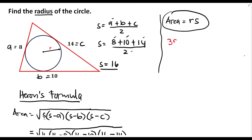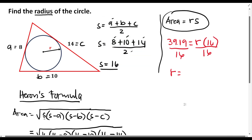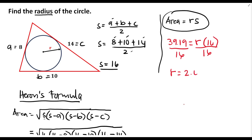Now we can find the radius. The area, 39.19, equals the radius times the semi-perimeter, which is 16. Dividing both sides by 16: 39.19 divided by 16 gives us the radius equal to 2.45.